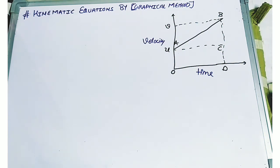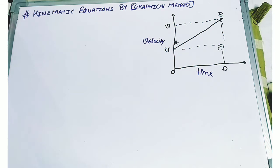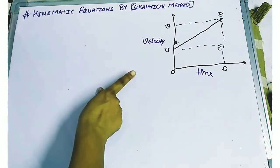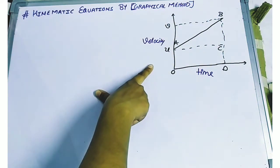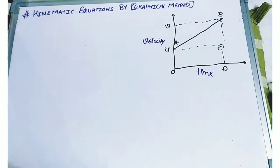Hello students. In this part we are going to learn about the kinematic equations by graphical method. Here I have plotted one graph which we have already discussed in the previous video. This is the representation of a uniformly accelerated body, which means a body is moving with a uniform velocity — it means it is accelerating. Initially we have considered that the body started its journey with velocity u.